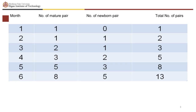On the fourth month, there are three pairs of rabbits. On the fifth month, there are five pairs of rabbits. On the sixth month, there are eight pairs of rabbits. How many pairs do you think there would be on the seventh month?